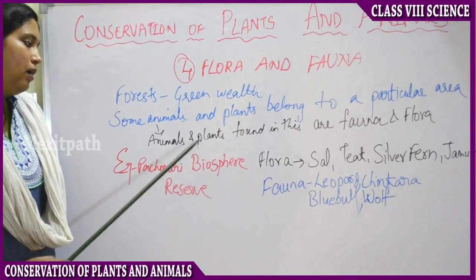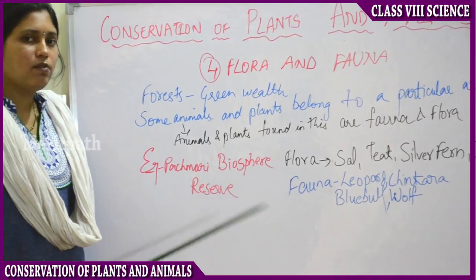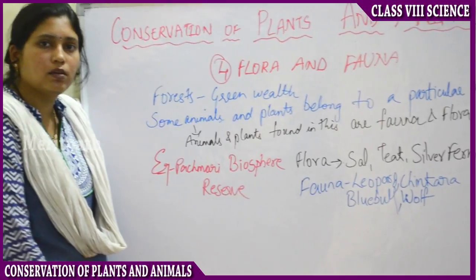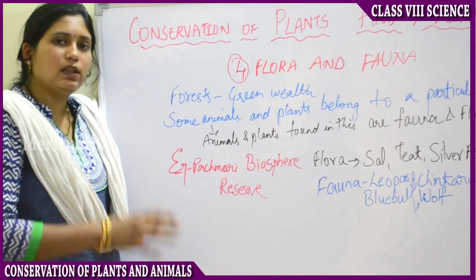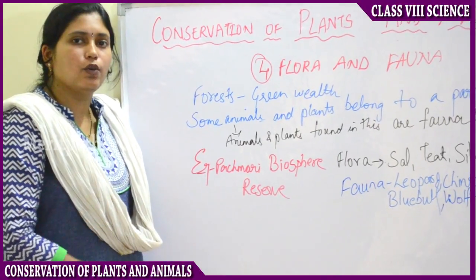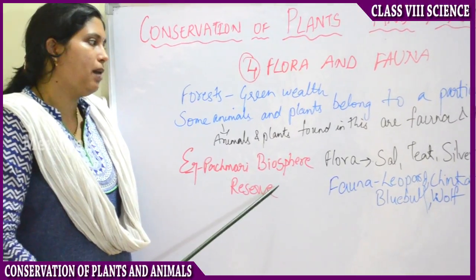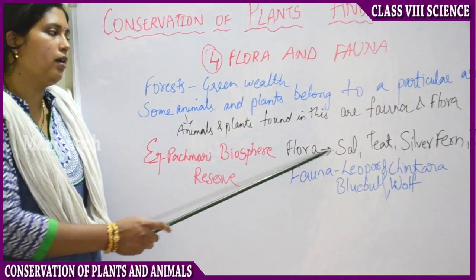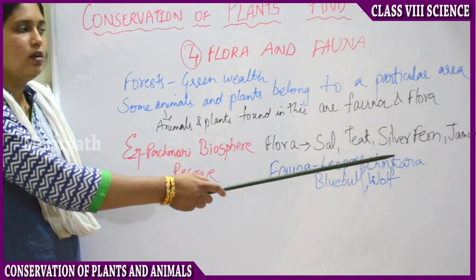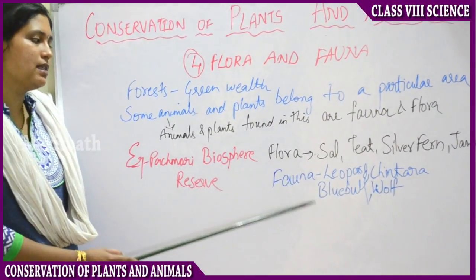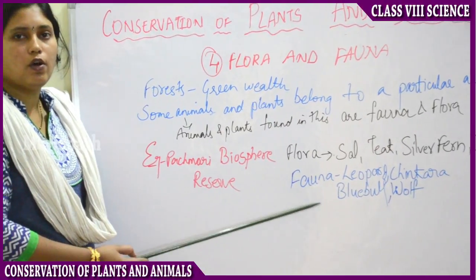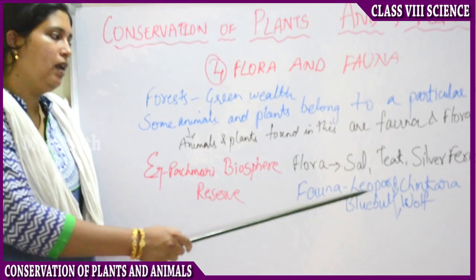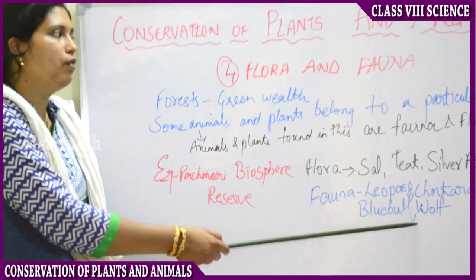For example, in the Pachmari Biosphere Reserve, the examples of flora are saar, tea, silver fern, and jamun trees. Examples of fauna conserved in the Pachmari Biosphere Reserve are leopard, chinkara, blue bull, and wolf.